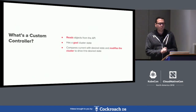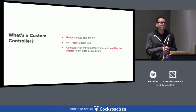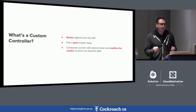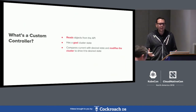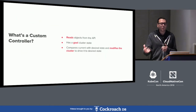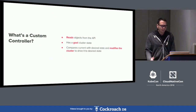Let's talk about what a custom controller actually is. A custom controller is a component that watches objects, looks at the current state of those objects and the cluster, and makes modifications to that state so that it reaches a desired state. Kubernetes is a declarative-based system — you declare what the goal state is, and there are many controllers watching the state of the cluster and trying to move it to that desired state.